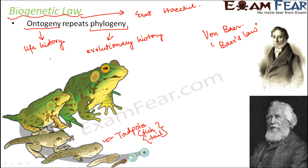Similarly, take the example of a chordate named Herdmania. If you look at its tadpole stage, it shows the characters of a chordate: the presence of notochord, presence of tail, and presence of a nervous system. However, as it grows to become the adult form of Herdmania, the notochord is not present, the tail is not present, and the nervous system is also reduced. This means that during the developmental phase, at certain stages, it resembles the evolutionary history. In the matured state those features are gone, but the life history cycle still shows the evolutionary history of that organism. That is why we say ontogeny repeats phylogeny.